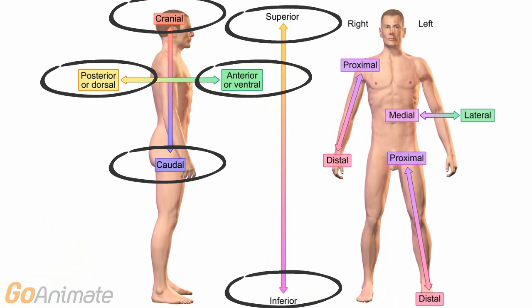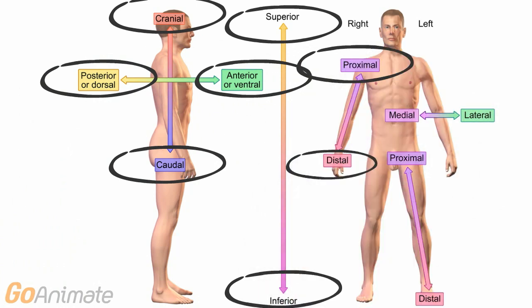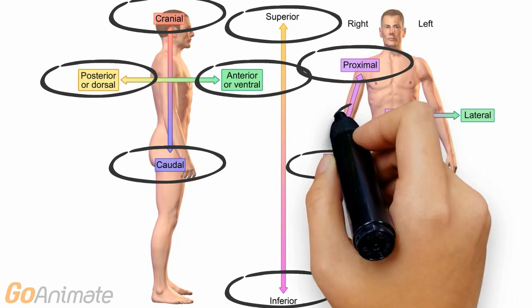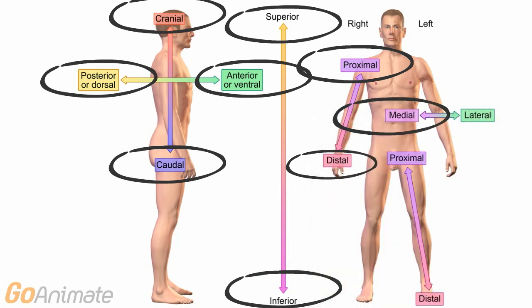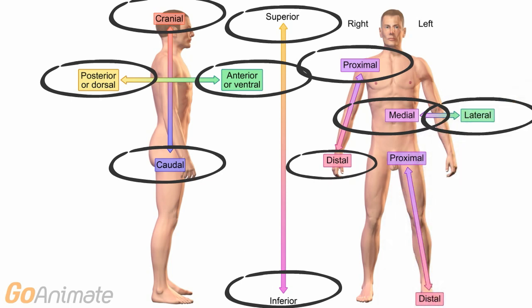For the arms and legs, we have proximal which means toward the origin, and distal which means away from the origin. For side to side, we have medial which means toward the middle, and lateral which means away from the middle.